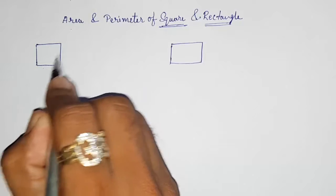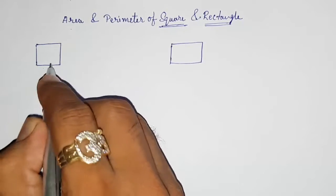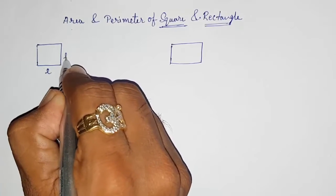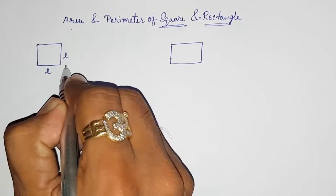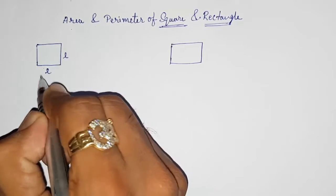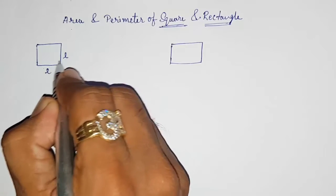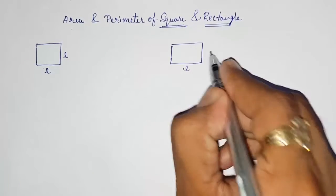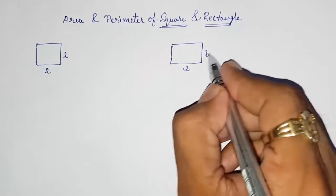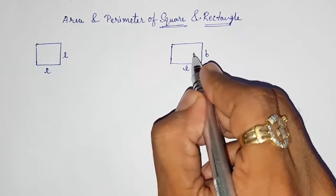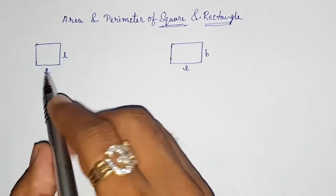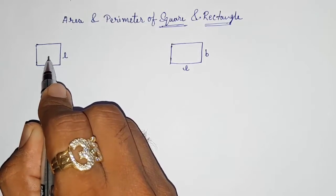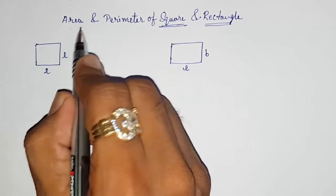This is a rectangle — here also we are having length and breadth, meaning both are two-dimensional figures. But in a square, length and breadth are both the same, so instead of breadth we can write length only. Here, this will be length and this will be breadth — both are different, that's why it forms a rectangle. If length and breadth are the same, we call it a square.